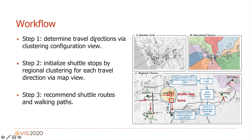By Step 1 and Step 2, we obtain a list of candidate shuttle bus stops along one travel direction. Step 3: Recommend shuttle routes and walking paths to represent the shuttle route from each direction cluster and the route path from the initialized shuttle route to its covered home destinations. We estimate the shuttle routes and walking paths to each home destination. As shown in the figure, the black line shows a complete shuttle route, and multiple lines between the shuttle stops and the home destinations indicate the walking path distance, with color indicating different destination reachability.